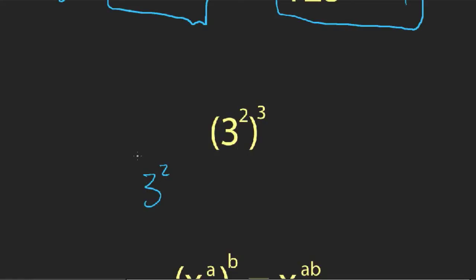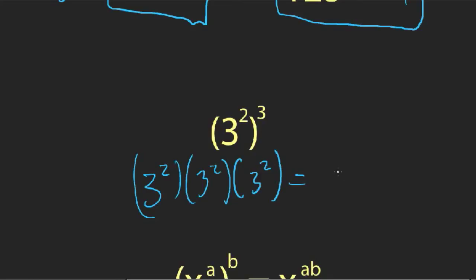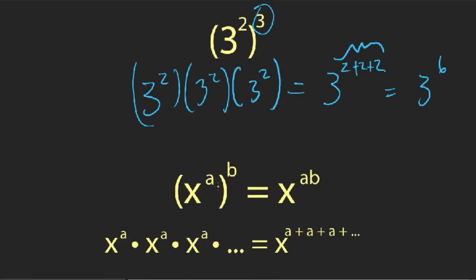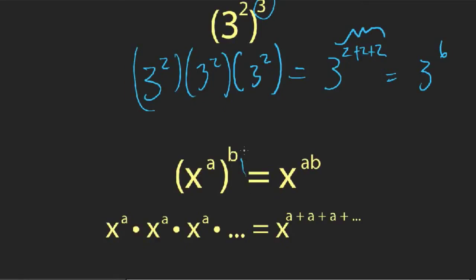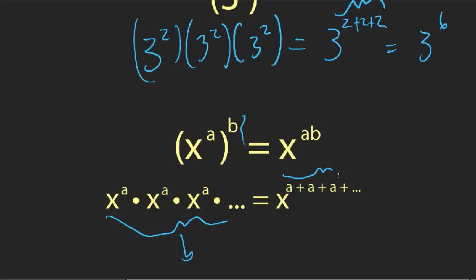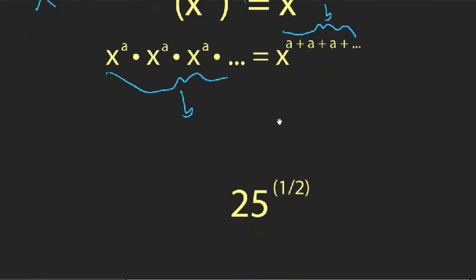Let's look at three squared, all to the third power. That's three squared times three squared times three squared. Using the multiplication rule, this becomes three to the two plus two plus two, which is three to the sixth. The reason we have three twos is because the outer exponent was three. If it had been seven, we'd add two seven times and get two times seven, which is fourteen. So the general rule is: x to the a, all to the b, equals x to the a times b. Note that this requires parentheses — without them, the order of operations changes.